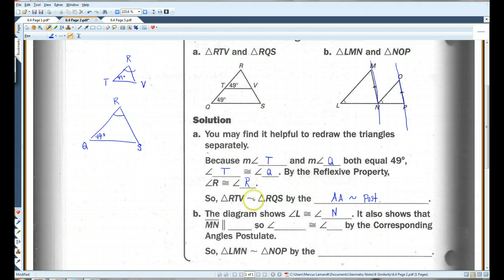So MN is parallel to OP. So if you think about it, because both of those lines are intersected by this transversal, this angle and this angle have to be congruent because they are corresponding angles. So angle LNM is congruent to angle P by the corresponding angles postulate.